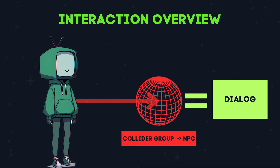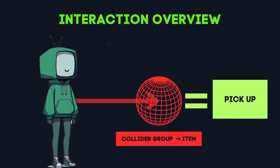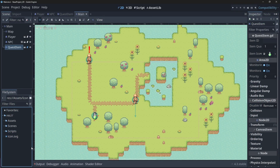If we are interacting with an object from the NPC group, we will start our dialogue. And if we are interacting with an object from the item group, we will check if that item is needed for an active quest — and if it is, we will pick it up, and if it isn't, we will just leave it be.